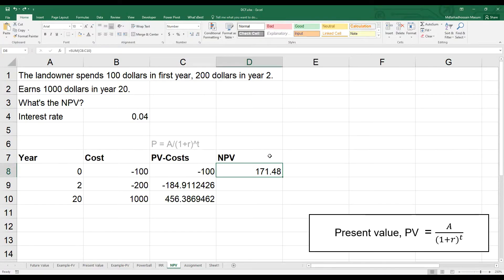If the landowner spends $100 in the first year, year 0, $200 in year 2, and earns $1,000 in year 20, what is the NPV? I put costs as negative and earning as positive, make all the values present value, and sum it up. Landowners NPV is about $171. Pretty simple, but very powerful.